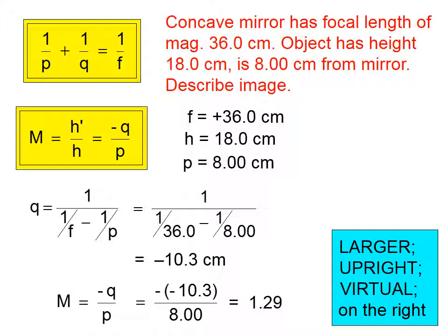And in this class, with regard to mirrors, all virtual images are on the right, and all objects are on the left. So for mirrors, virtual images are on the right, and real images will be on the left.